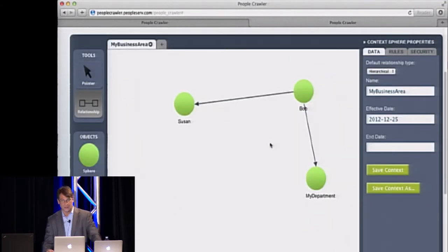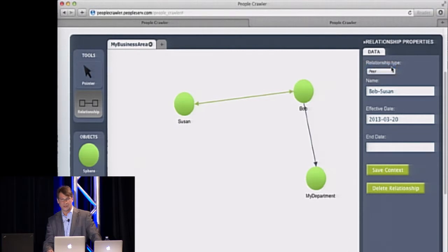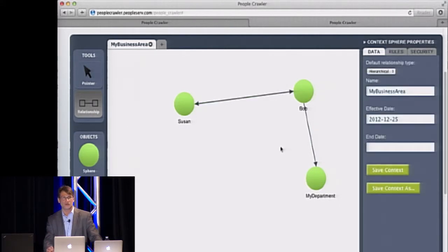Bob also has a peer relationship with Susan. So I'll bring in Susan. Touch on the relationship tool, touch on Bob, touch on Susan. And there's the relationship. But I said this was a peer relationship. So to change that, I click on the relationship and go over here to relationship type and change it to peer. And the arrow goes in both directions. You notice also that everything in this system is effective dated and end dated. So for instance, if I have a temporary relationship, such as somebody covering for somebody else while they're on vacation, you just set it up once and it'll expire when it hits the end date. Also, since everything is effective dated in the system, it creates an audit trail. You can reconstruct the state at any point in time. And auditors love that kind of thing.